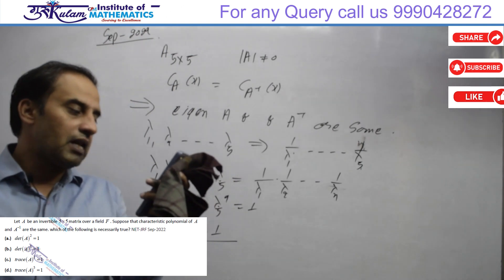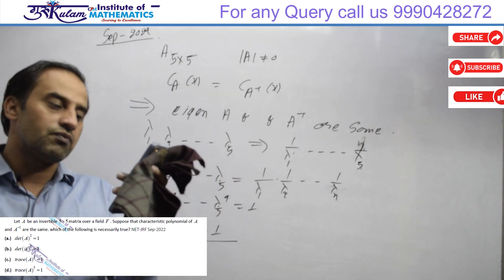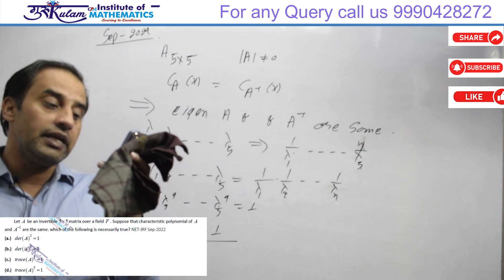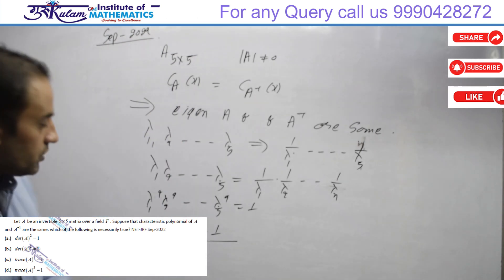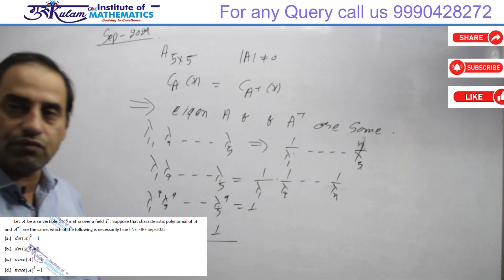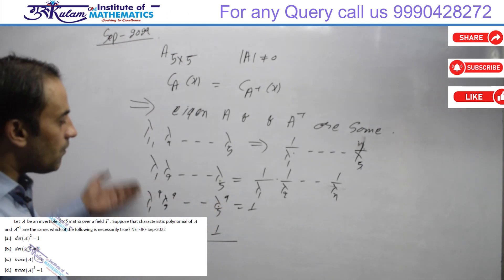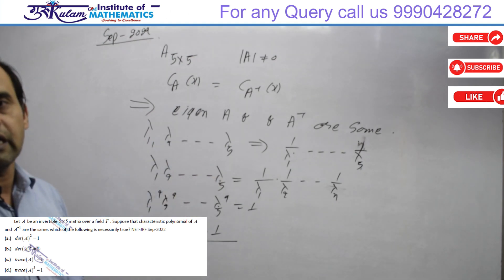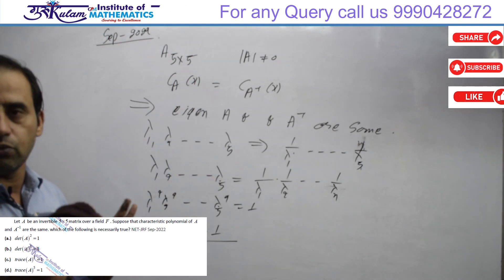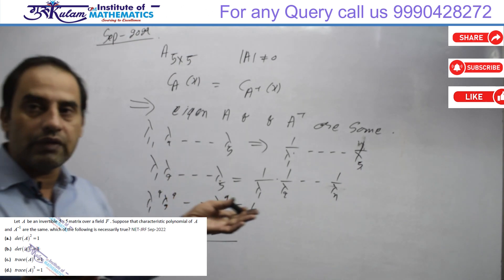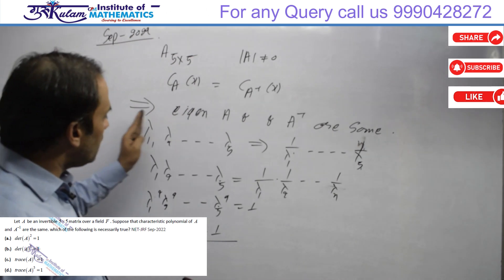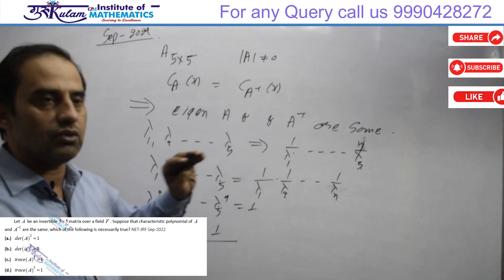Looking at the options: the first option says determinant of A² is 1 — that is proved. The second option says determinant of A⁵ is 1 — that is not guaranteed, because even though λ₁²·λ₂²·...·λ₅² = 1, raising to the 5th power does not guarantee the result is 1. For example, if the eigenvalues of A are 1, -1, 1, -1, that won't ensure det(A⁵) = 1.